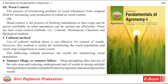Key 3: Weed Control. The process of minimizing the problem of weed infestation from cropped fields for increasing crop production is called weed control. Or, weed control is the process of limiting infestations so that crops can be grown profitably or other operations can be carried out efficiently. There are 4 weed control methods: cultural, mechanical, chemical, and biological.